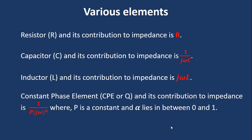Next is constant phase element. We are denoting it by CPE or Q. This is a very important element, and its contribution to impedance is 1/(P(jω)^α), where P is a constant and α lies between 0 and 1. So for example, if the value of α is 0, that means 1/(P(jω)^0), that means 1/P. So it will be a pure resistance.